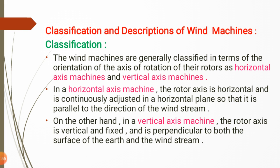On the other hand, in a vertical axis machine, the rotor axis is vertical and fixed, and is perpendicular to both the surface of the earth and the wind stream, which generally flows in the horizontal direction. So in a vertical axis wind turbine, the axis of rotation is vertical and perpendicular to the direction of the wind.